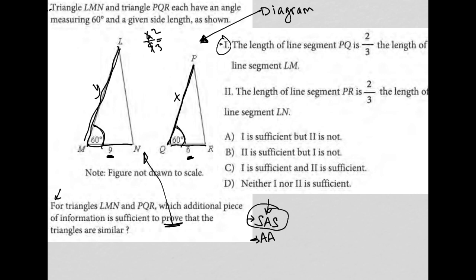How about two, the length of line segment PR, so basically moving over to the other side of the triangle. The length of line segment PR is two thirds. So the same information, just the opposite side of the triangle. So I kind of see what they're doing here.